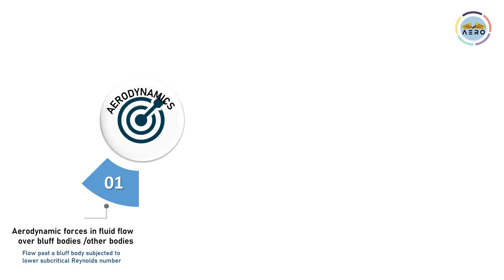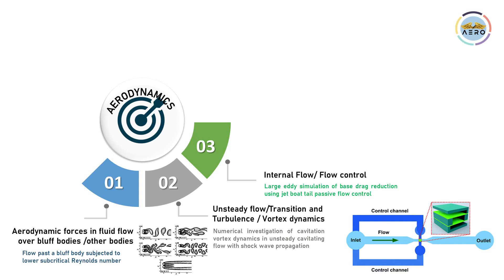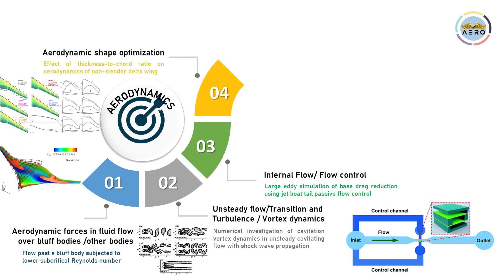Second is unsteady flow, transitions, turbulence, and vortex dynamics — for example, numerical investigation of cavitation vortex dynamics in unsteady cavity flow with sharp wave propagation. Then internal flow or flow control, either active or passive, such as large-area simulation of base drag reduction using a boat tail passive flow control. Another topic is aerodynamic shape optimization.